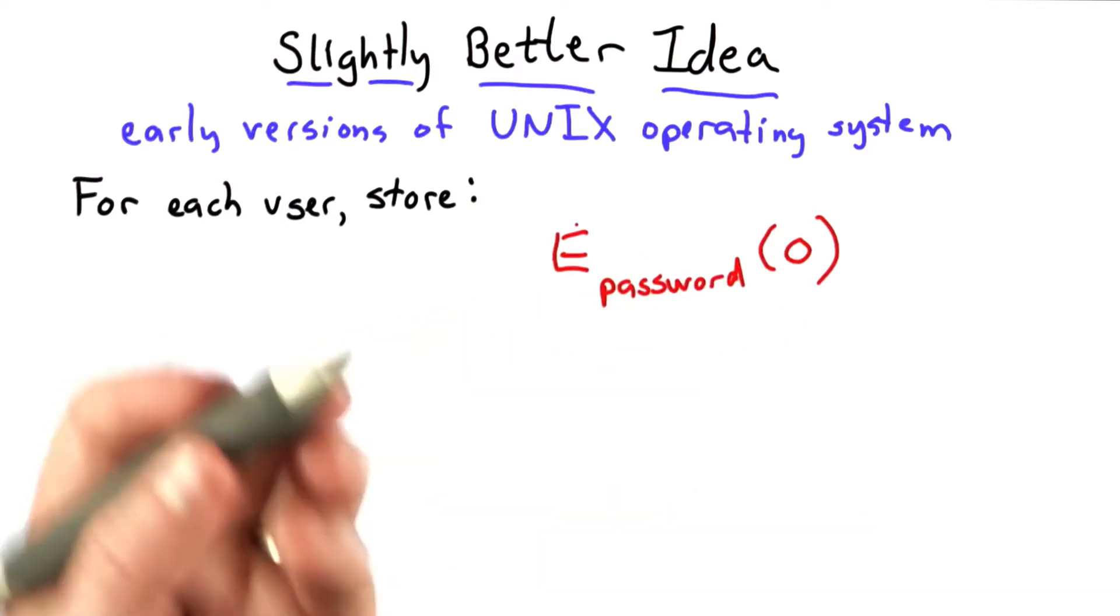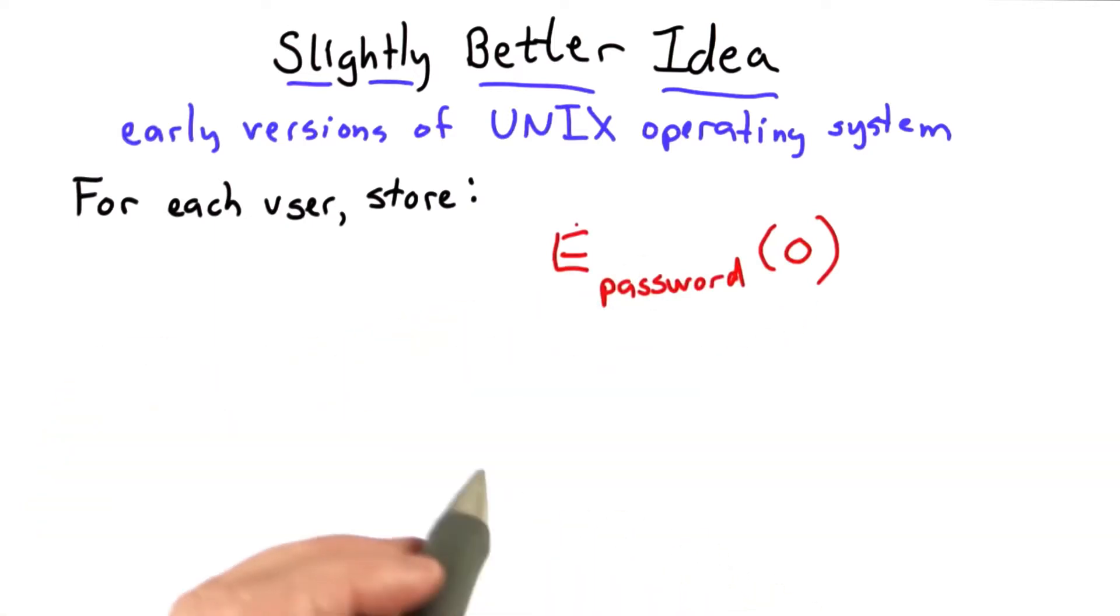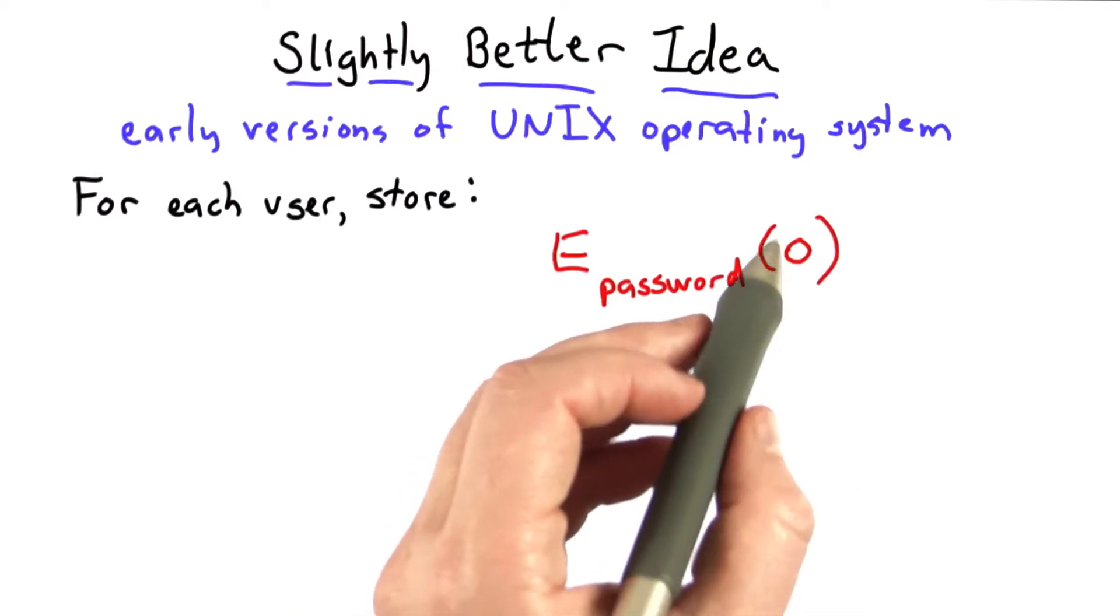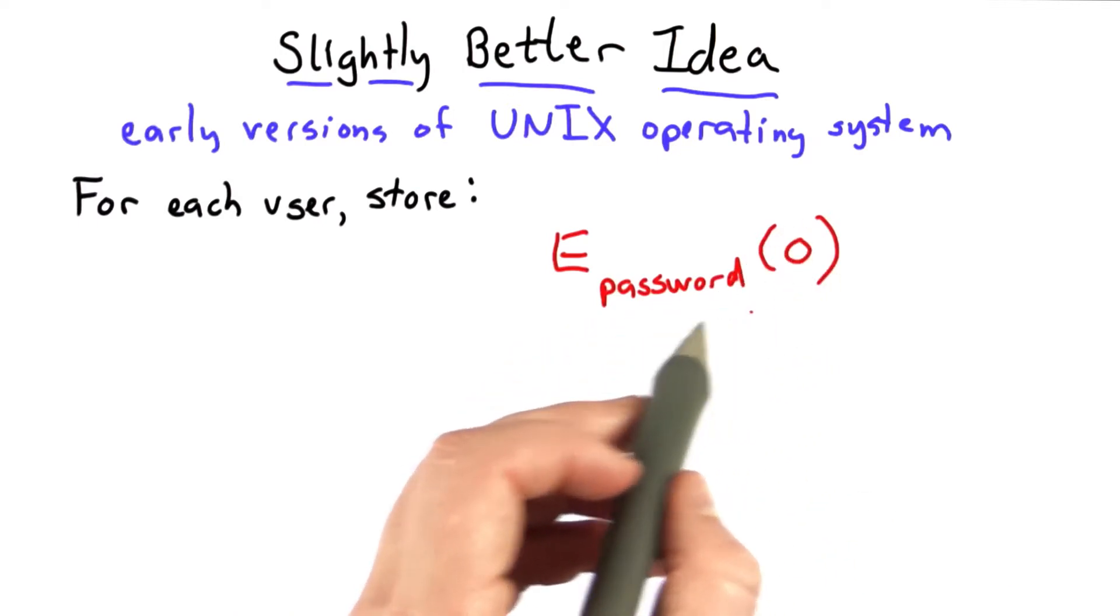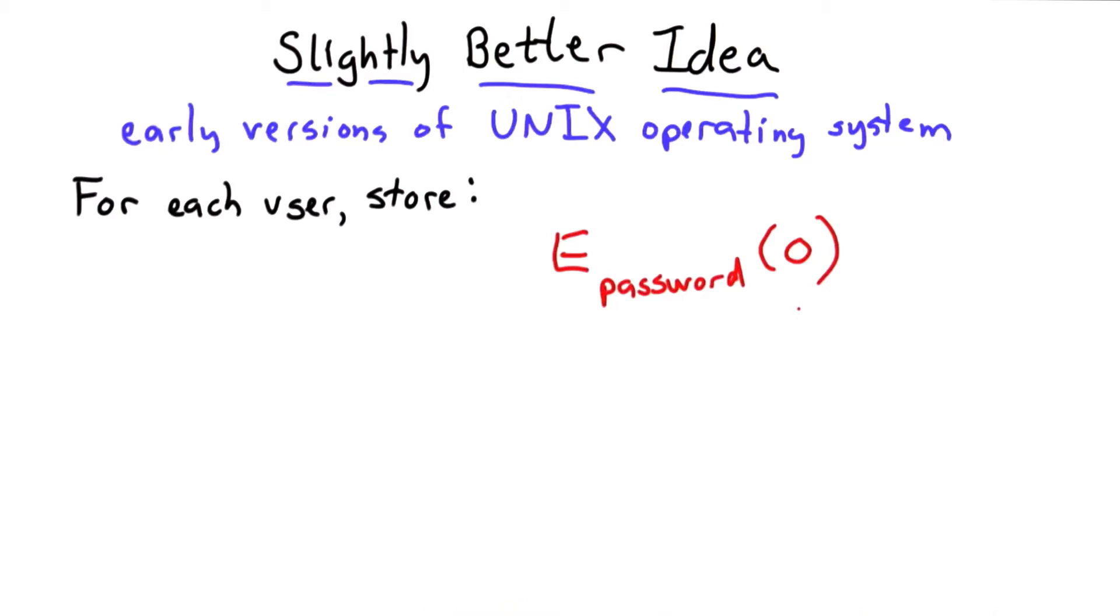So this means there's no key to keep secret on the server. Someone who compromises the password file, well, they know that the value being encrypted is 0, but would need to test possible passwords to find the one that matches.